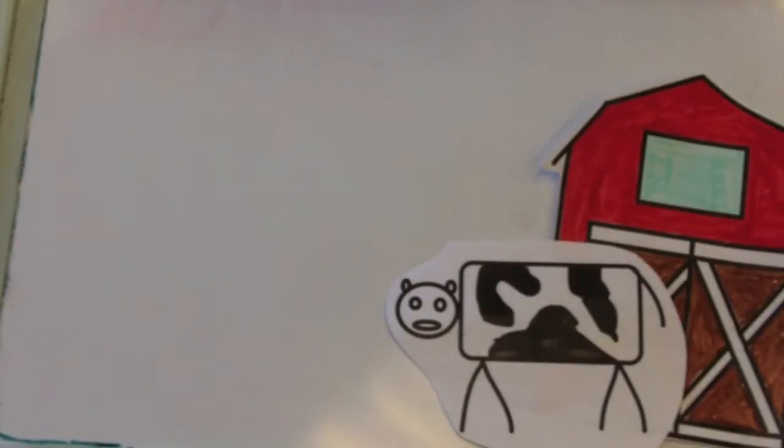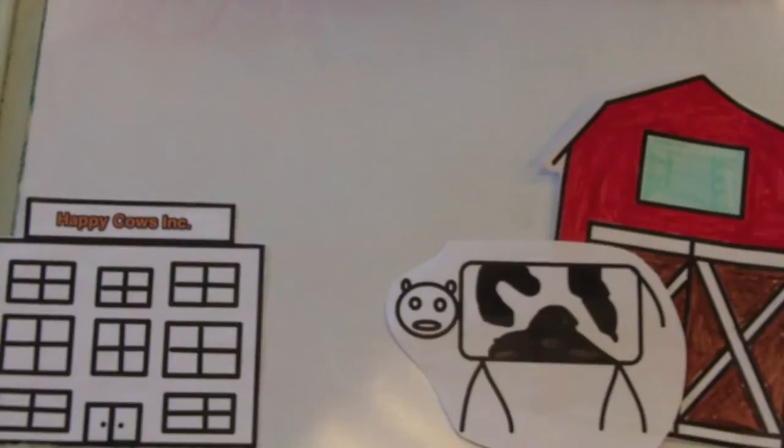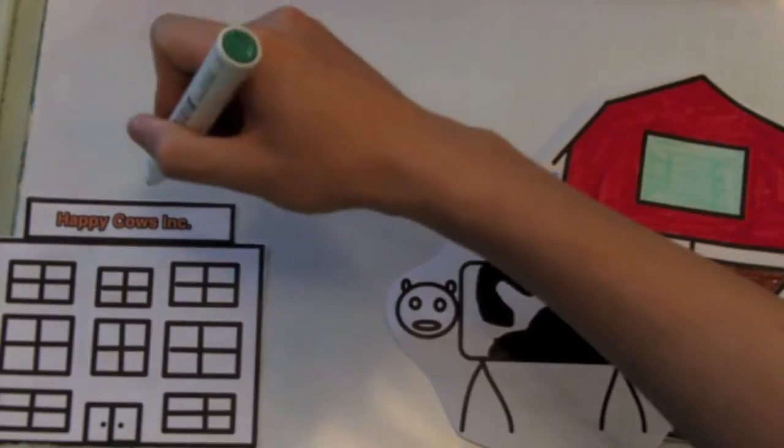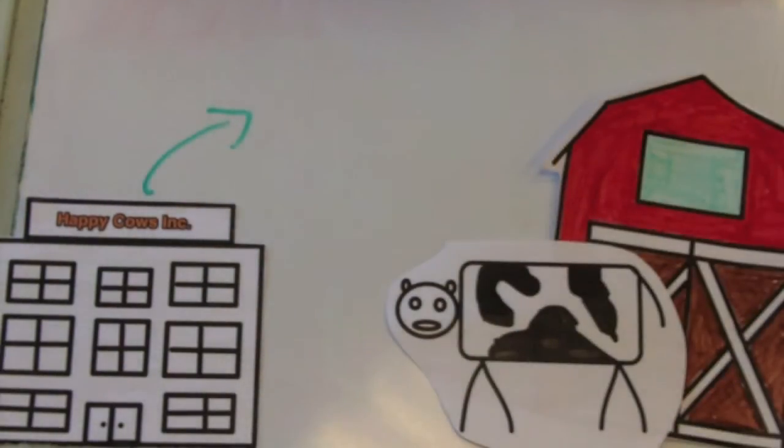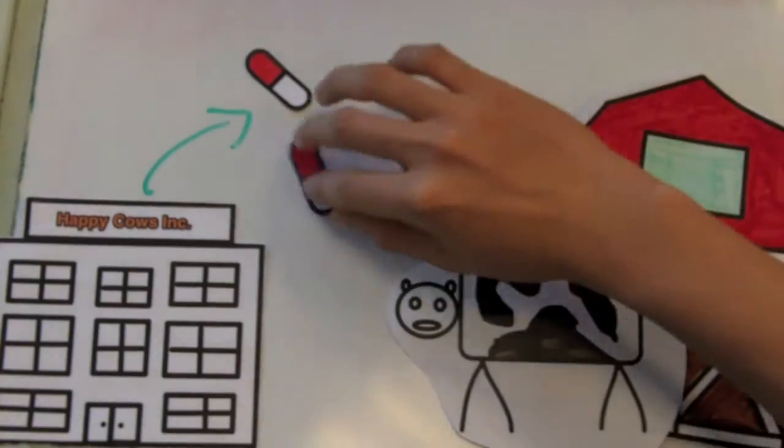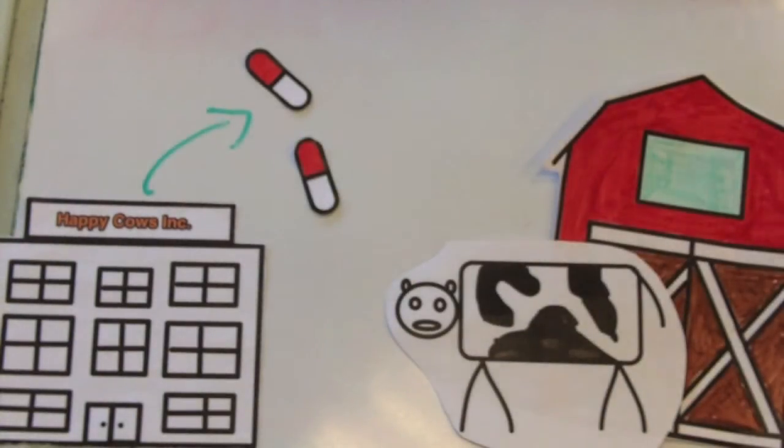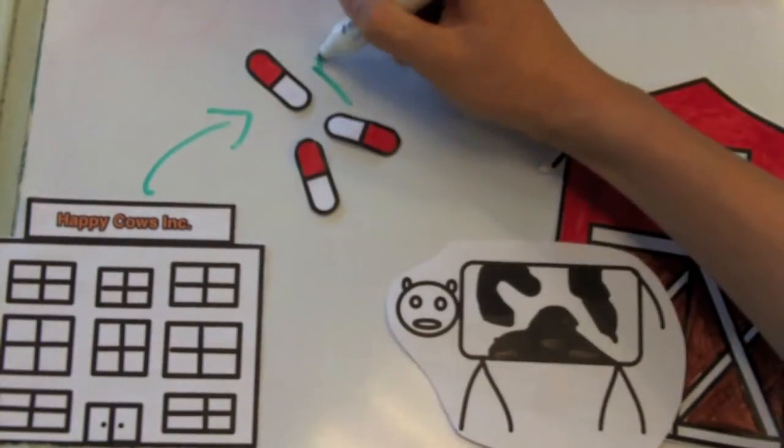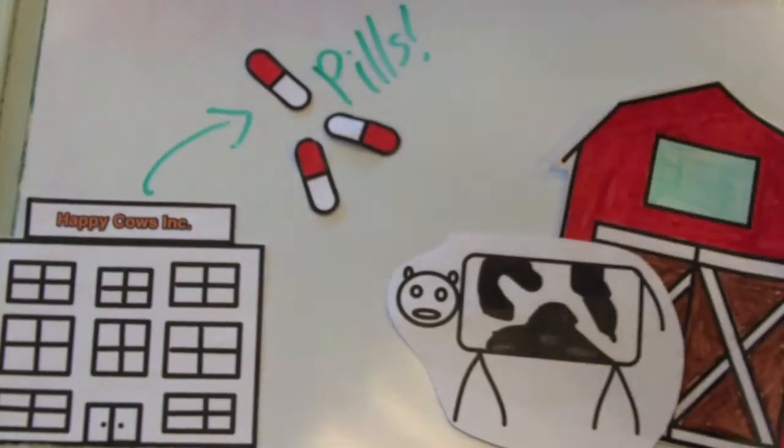Right across the street from the farm that Bessie lives in, there is a cow research and development center. This firm produces all kinds of cow products that the farm buys. Recently, there has been a new discovery for a magical cow pill that turns methane into glucose, ultimately preventing Bessie and her peers from releasing methane when they fart.